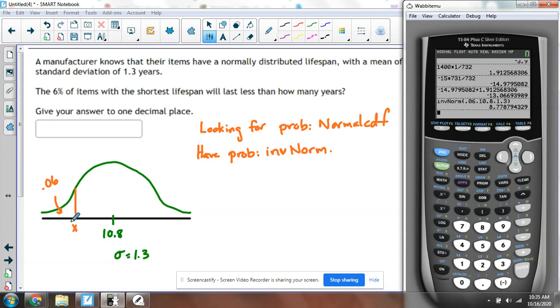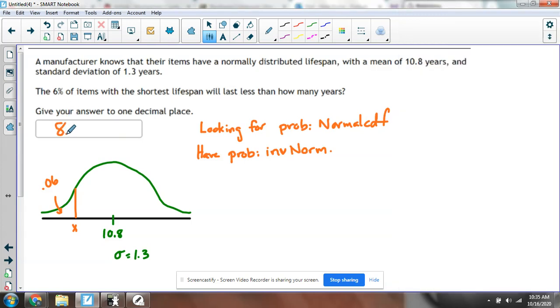I'll enter, and I get, okay, that value right there that cuts off the bottom 6% is 8.77 or 8.8, when rounded to 1 decimal place.